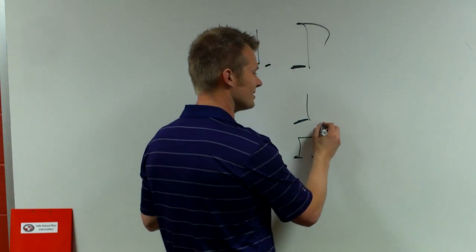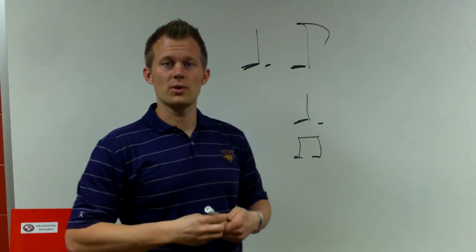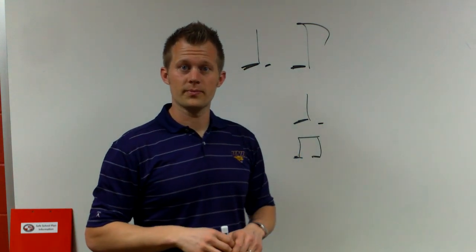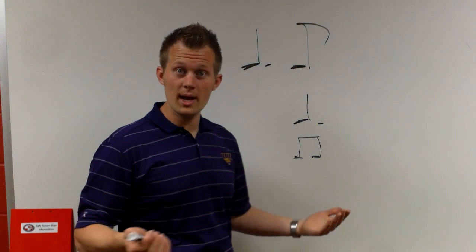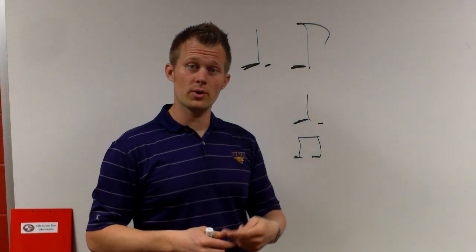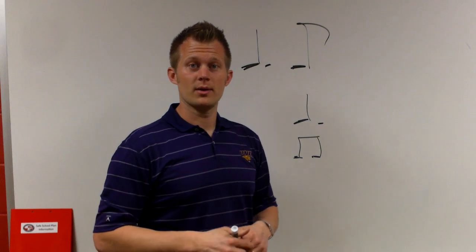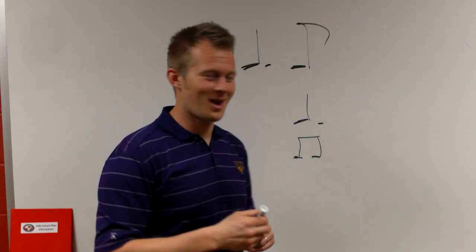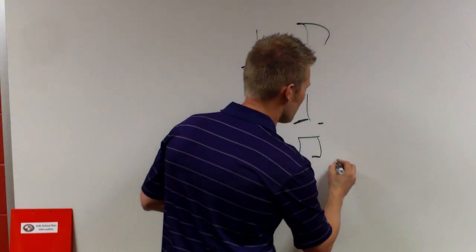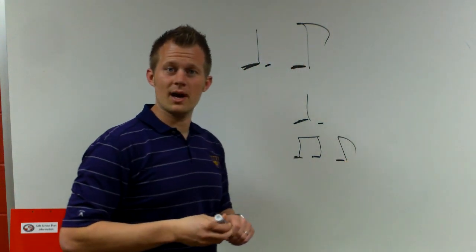Anytime we add a dot to a note, it increases the note by half its value. So half of a quarter note would be one eighth note, right? If there's two eighth notes in a quarter note, half of that would be one. Two plus one is, that's right, three. Good math. So there are three eighth notes inside of a dotted quarter note.